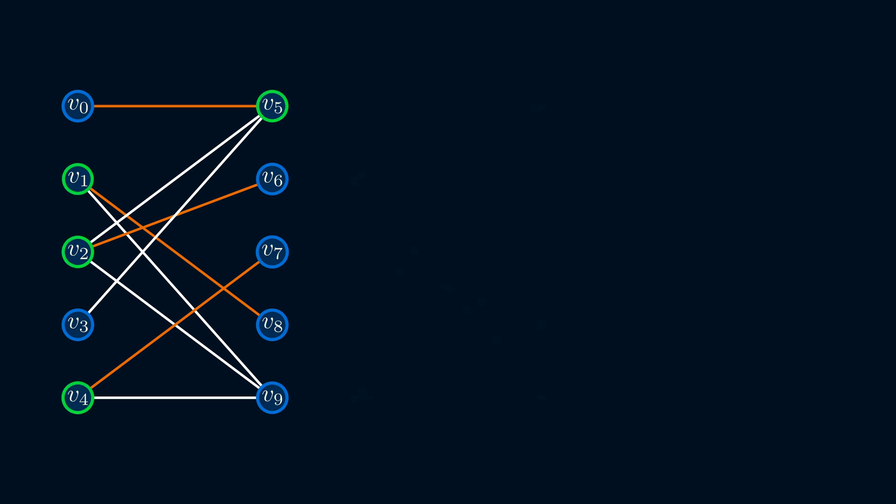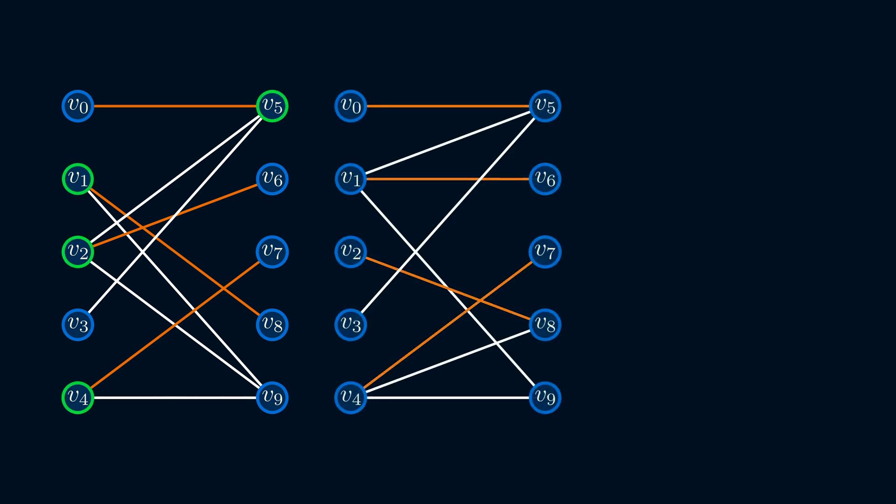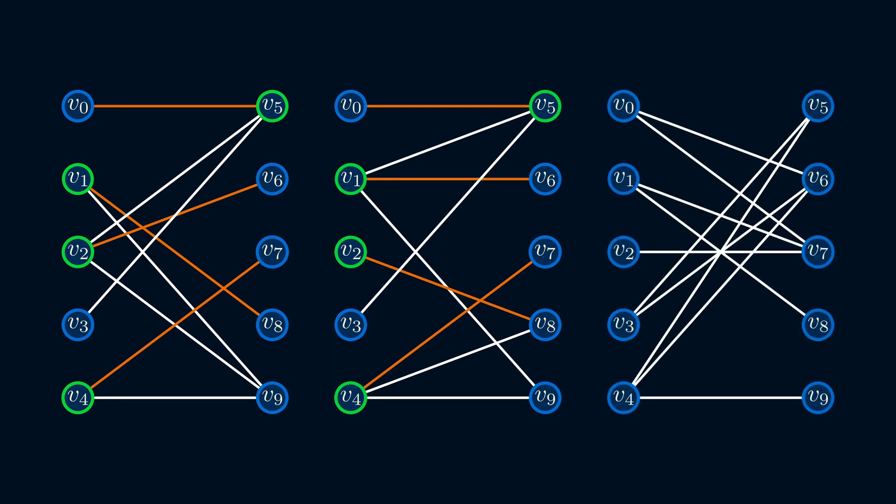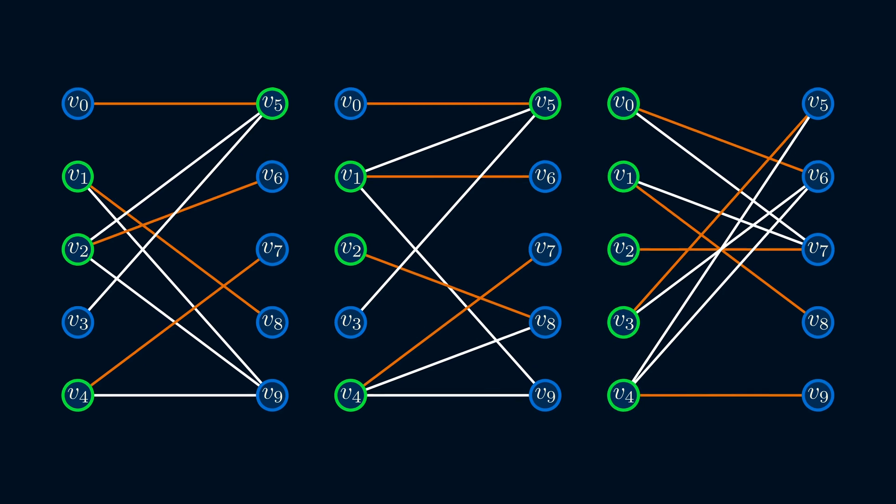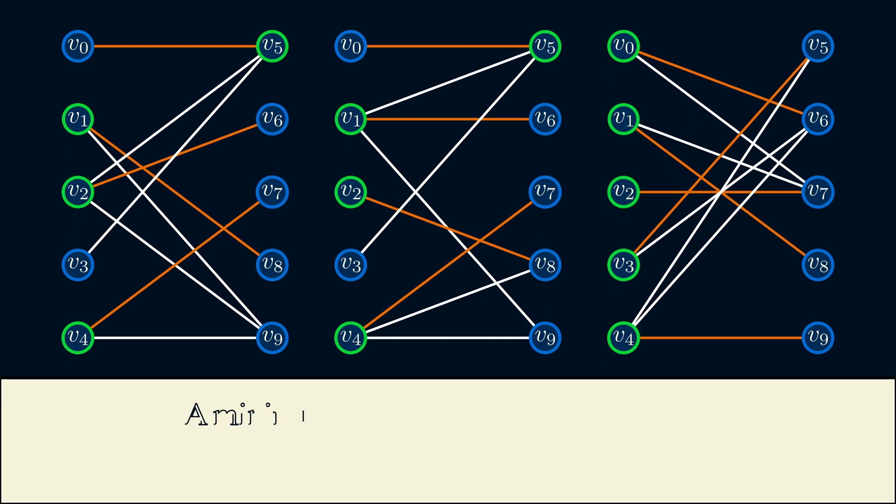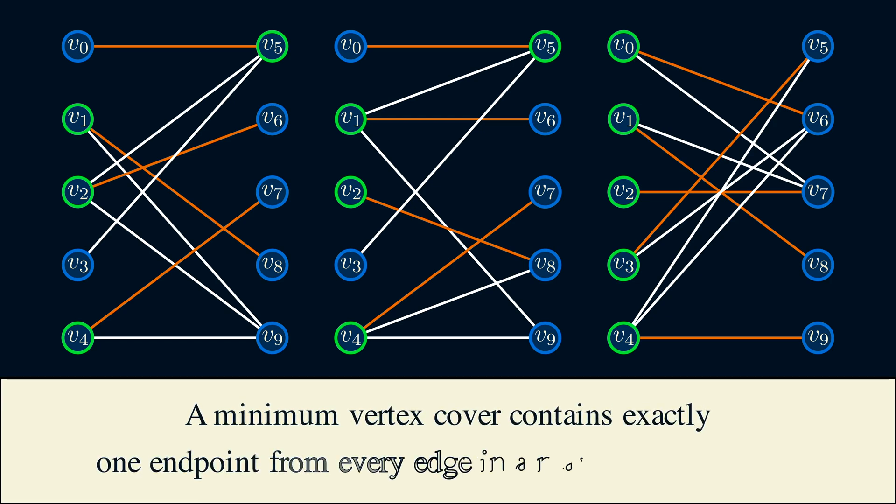So Konig's theorem only applies to bipartite graphs, like the ones here. Here, we have a bunch of maximum matchings and minimum vertex covers. From these examples, notice that for every edge in a matching, we never have both endpoints in the vertex cover. This is because if both endpoints are included, then the vertex cover will be strictly larger than a matching. So this violates Konig's theorem.